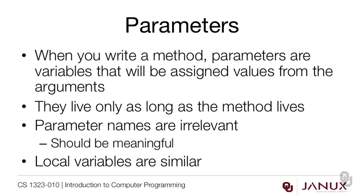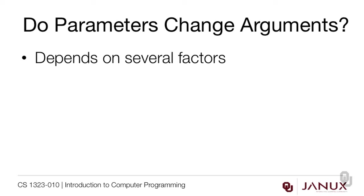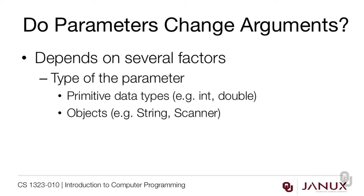Local variables are similar to parameters, but they're a little bit different because parameters get initialized — that is, given values — from the arguments, whereas local variables don't. Now here's the big question: do parameters change arguments? It turns out that depends on several factors. First is the type of parameter, so the answer is different for primitive data types and objects.